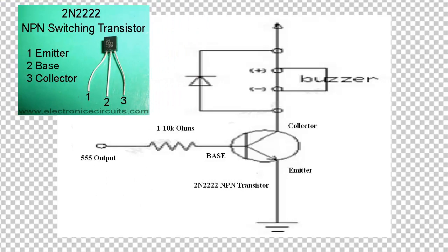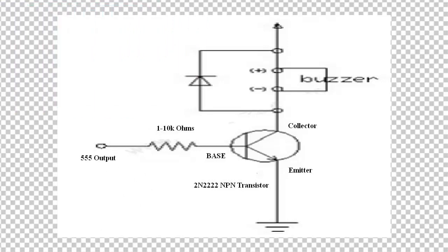First pin is the emitter, second pin is the base, third pin is the collector. So the first pin emitter, you ground it. Second pin is the base, third pin is the collector. In the collector, for the buzzer, there are two wires — red and black.